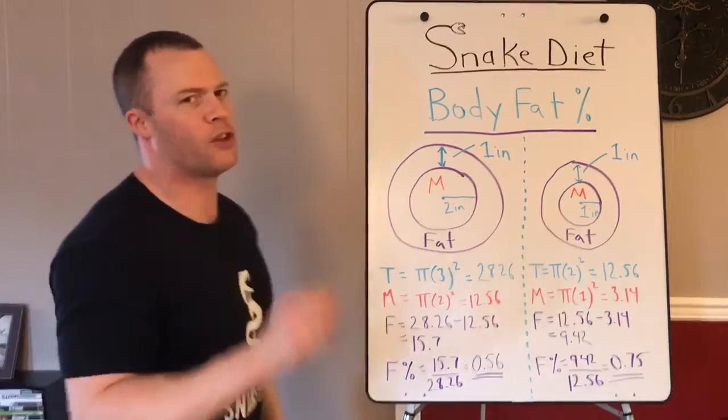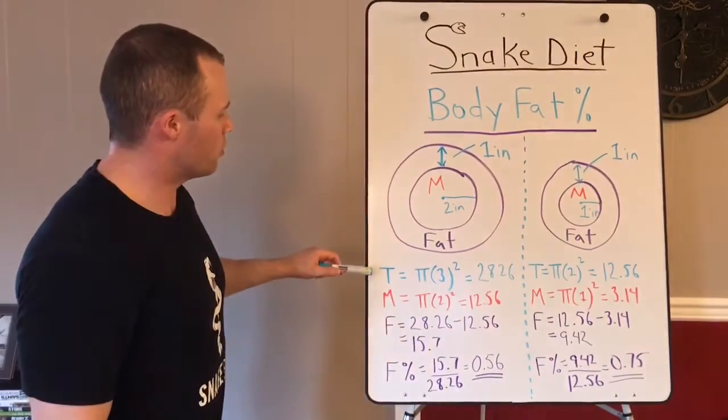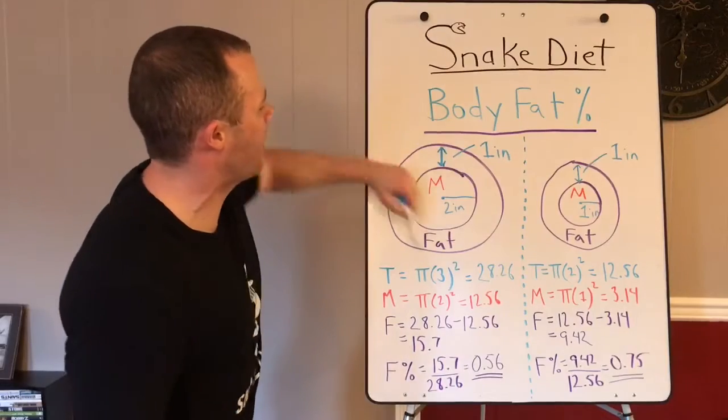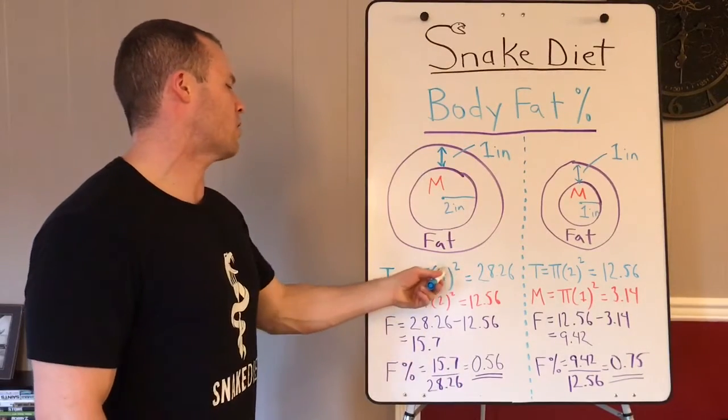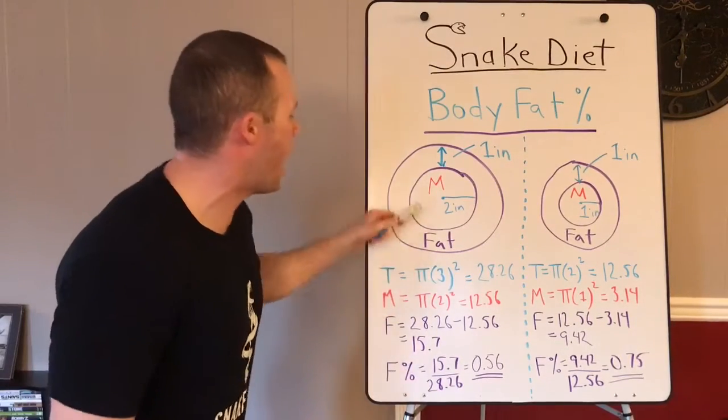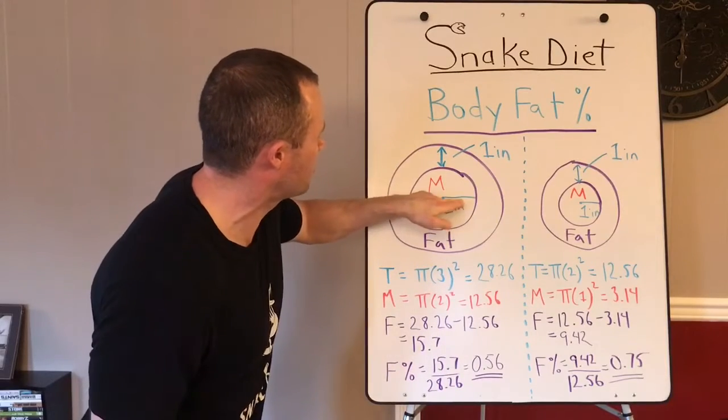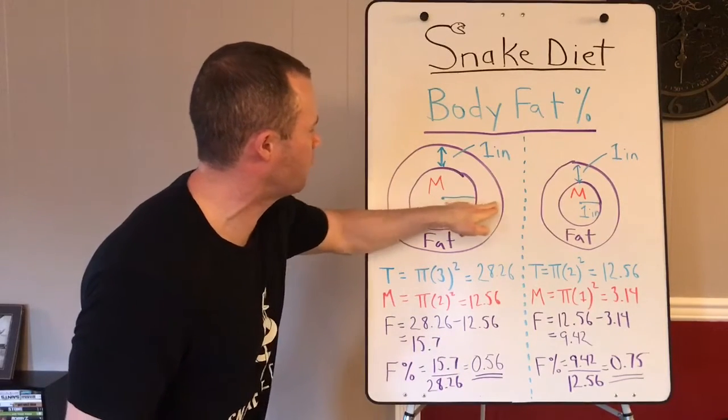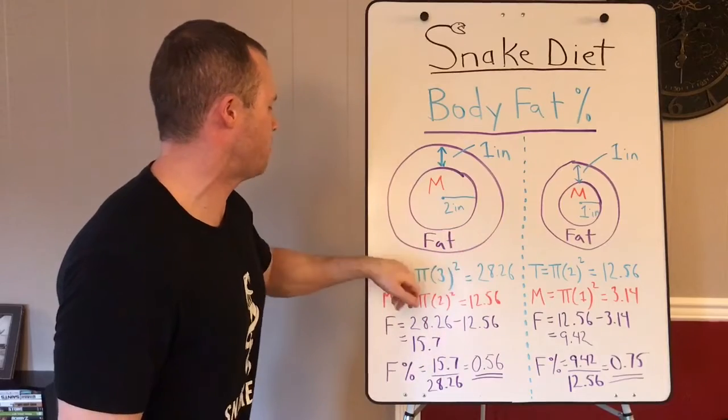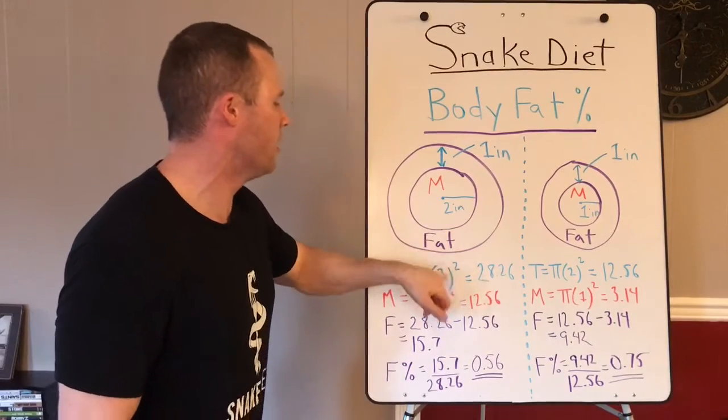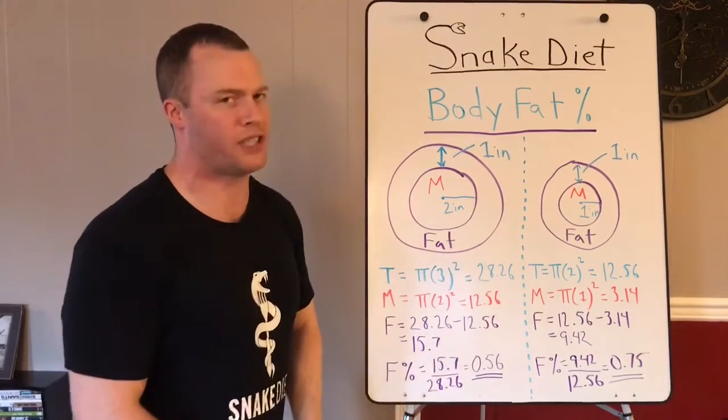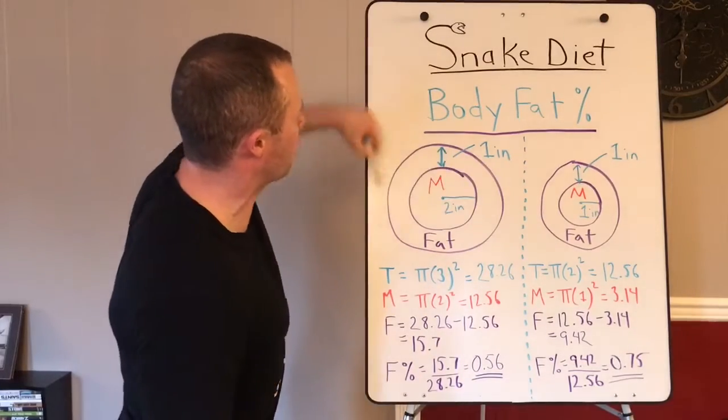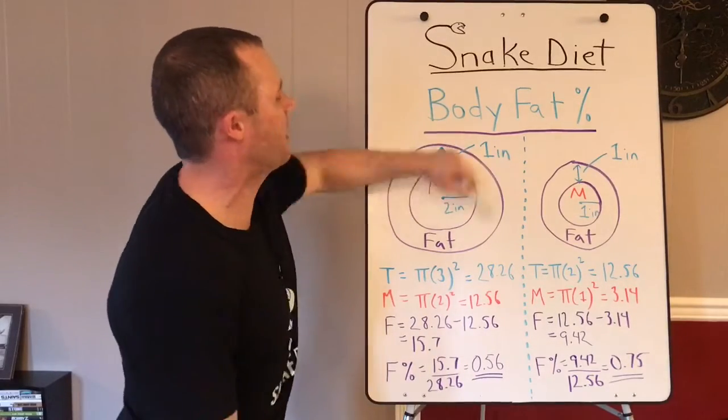Total area of this big guy is gonna be pi r squared, which is pi times two inches plus one inch for the thickness of the fat, so that's pi times three squared equals 28.26. That's 28.26 for the total area of this big guy.